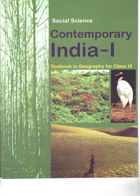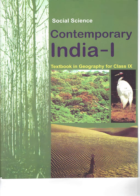The Peninsular Plateau is flanked by a stretch of narrow coastal plains running along the Arabian Sea on the west and the Bay of Bengal on the east. The western coast is sandwiched between the Western Ghats and the Arabian Sea. It is a narrow plain consisting of three sections: the northern part is called the Konkan Coast (Mumbai–Goa), the central stretch is called the Kannad Plain, while the southern stretch is referred to as the Malabar Coast. The plains along the Bay of Bengal are wide and level. In the northern part, it is referred to as the Northern Circars, while the southern part is known as the Coromandel Coast. Large rivers such as the Mahanadi, Godavari, Krishna and the Kaveri have formed extensive deltas on the coast. Lake Chilika is an important feature along the eastern coast.